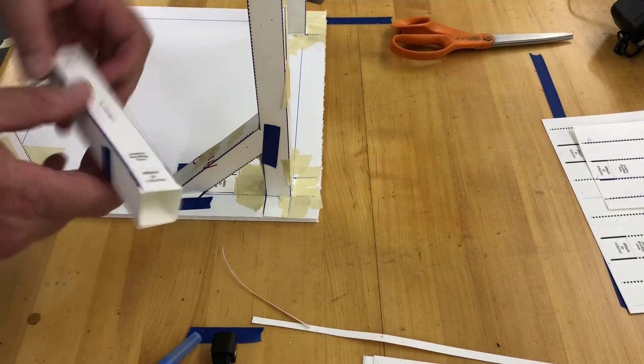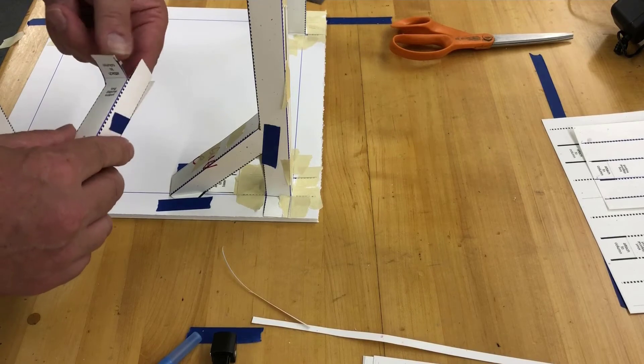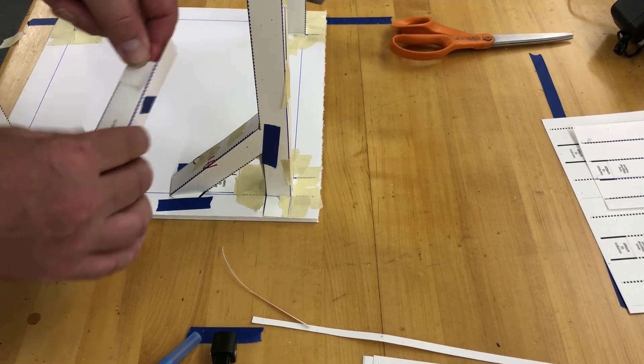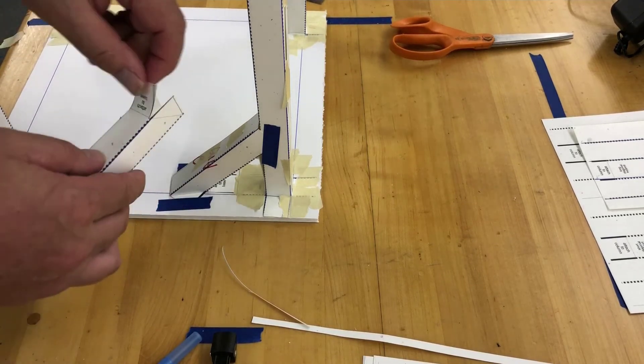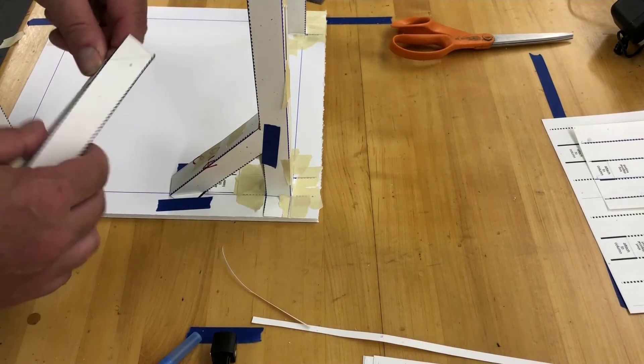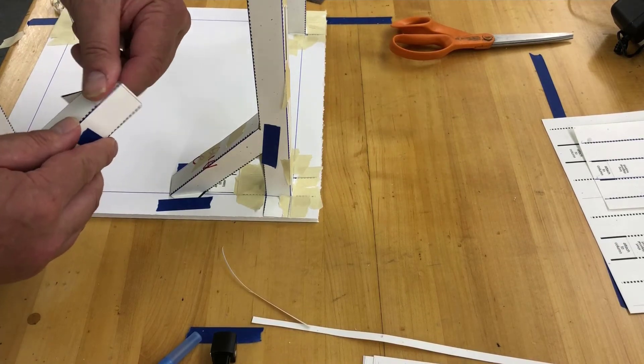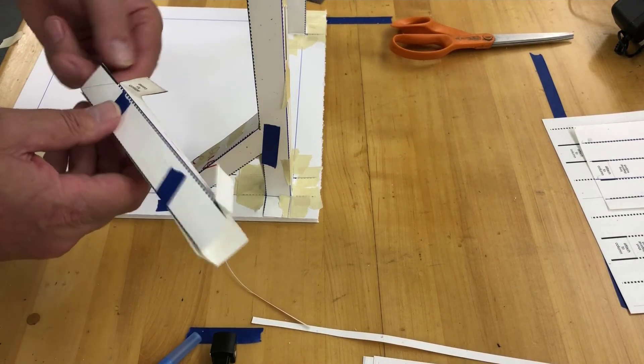So we have the longer one, and just like we did before we're gonna fold this down at a 90 degree angle there. That's folded. This gets folded down. The angle piece folds back. This angle piece gets folded back.